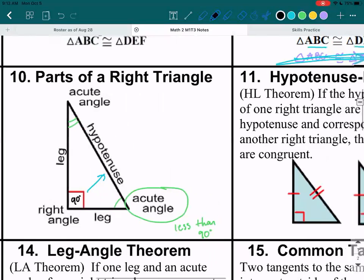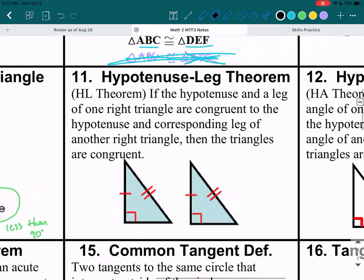Let's go on to hypotenuse leg theorem. So the hypotenuse leg theorem, it's if the hypotenuse and the leg of one right triangle are congruent to the hypotenuse and the corresponding leg of another right triangle, then the triangles are congruent. So if you have two triangles like that and the hypotenuses are congruent and also a leg is congruent, then you have hypotenuse leg theorem saying that they are congruent triangles.